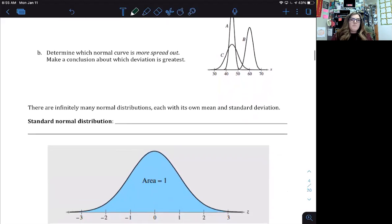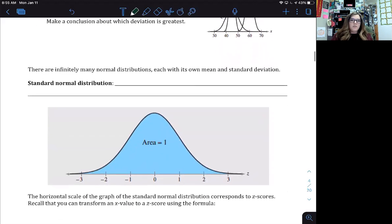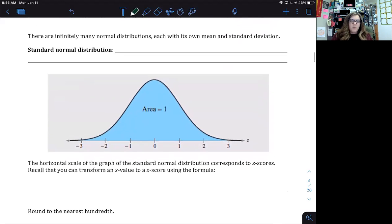So there are infinitely many normal distributions, each with its own mean and standard deviation, but we have one very important one and that is the standard normal distribution. So the standard normal distribution is a normal distribution with a mean of 0 and a standard deviation of 1.